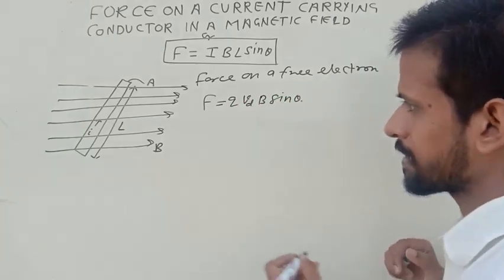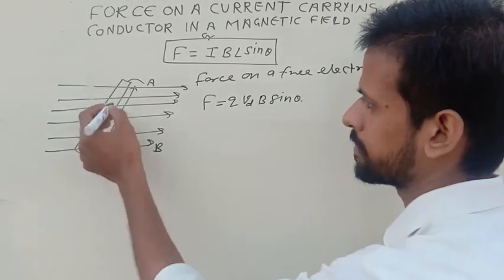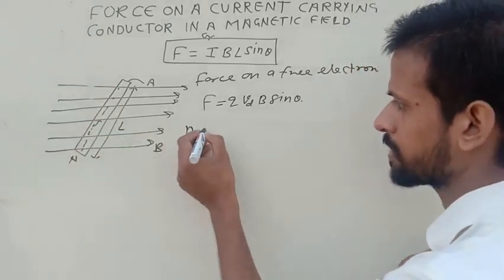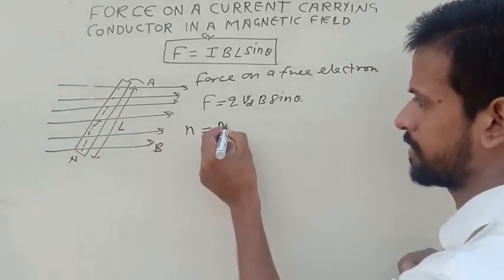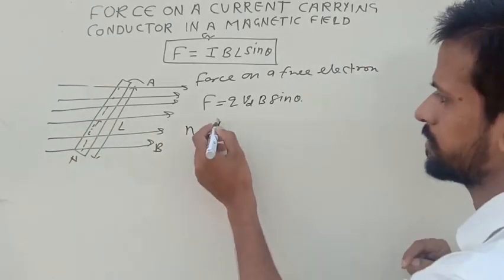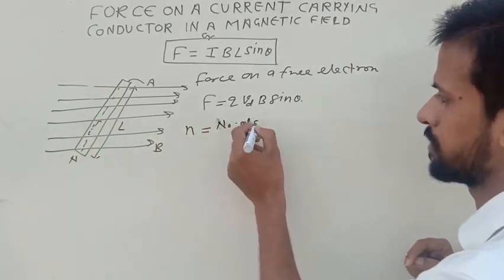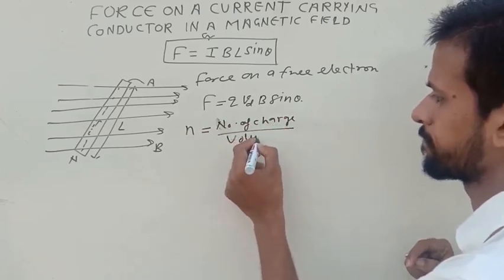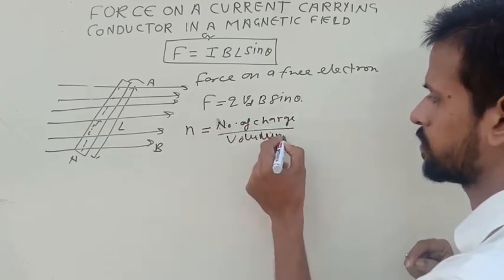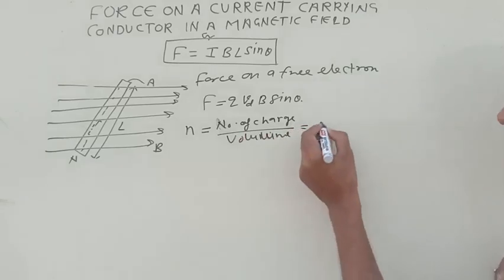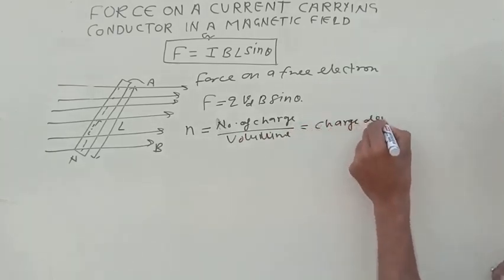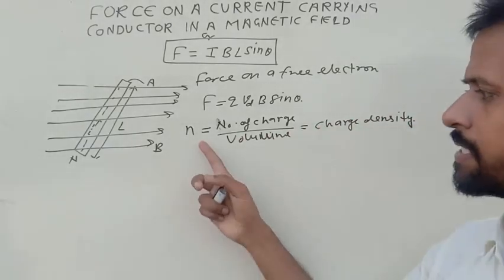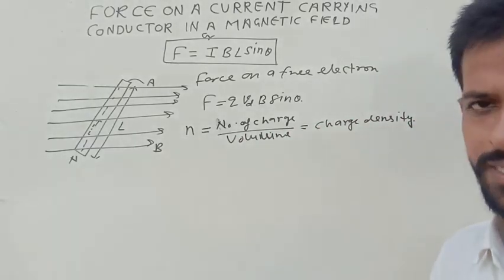So now let us consider there are N numbers of electrons. So we introduce a quantity N, which is the number of charge per volume. We call this charge density.